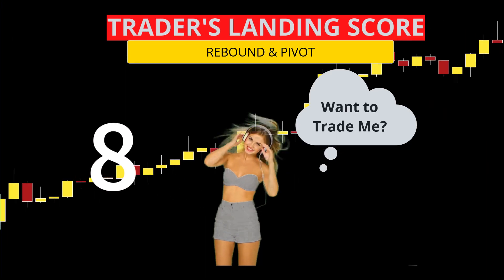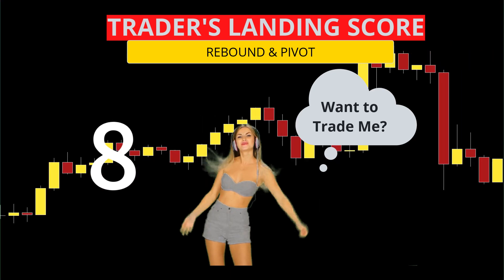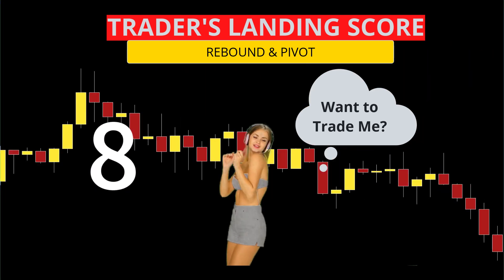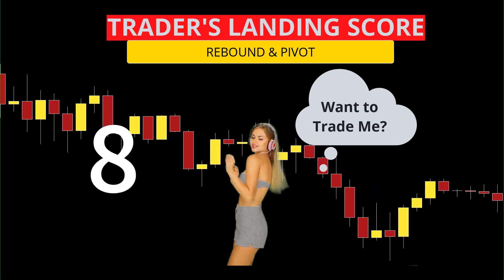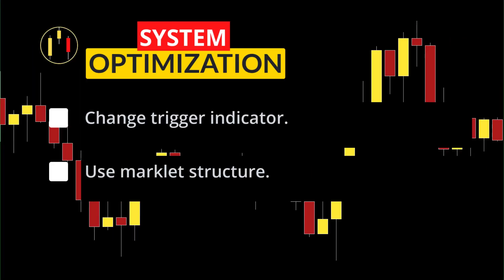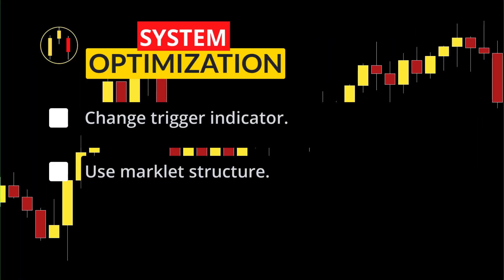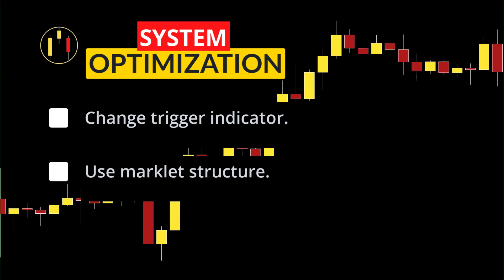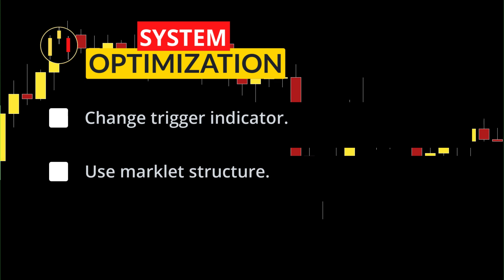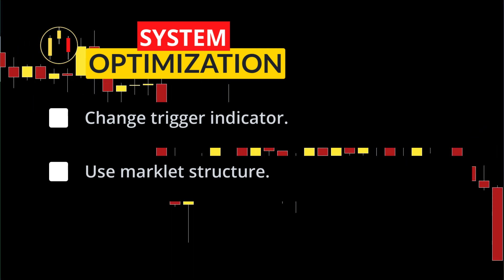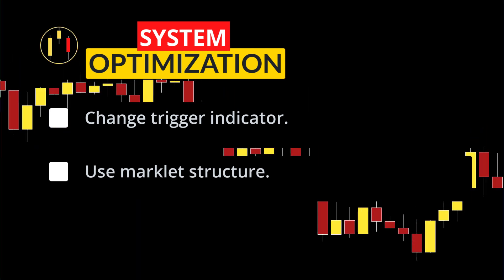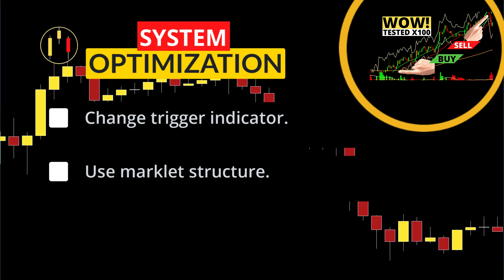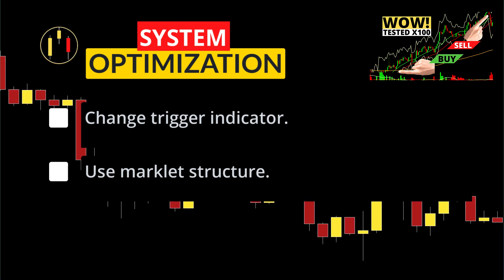I'm going to give the Pivot and Rebound system a Trader's Landing score of eight due to the huge potential for optimization using this system. So how do we find the crumbs to optimize and make this system better? I like using the Dynamic Structure Indicator as a non-subjective stop loss level. So maybe instead of a 55 EMA as your trigger, you could use something like the SSL channel. For more information on that, be sure to check out this video where I test out a custom SSL channel.